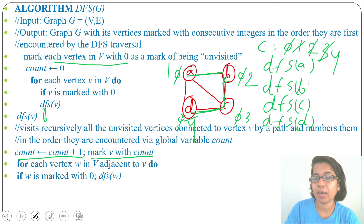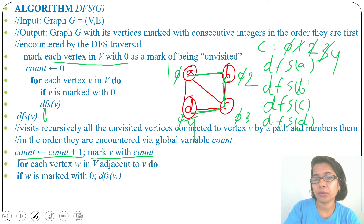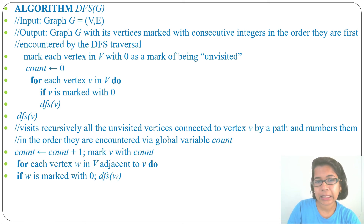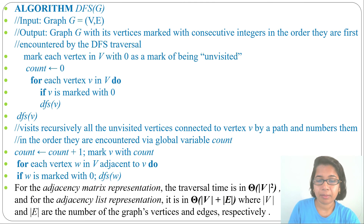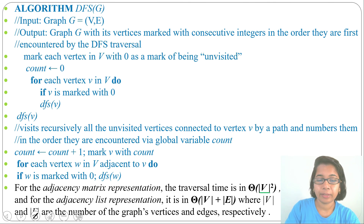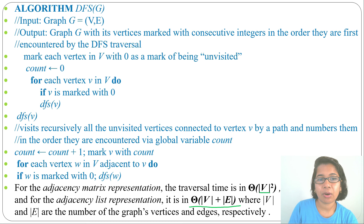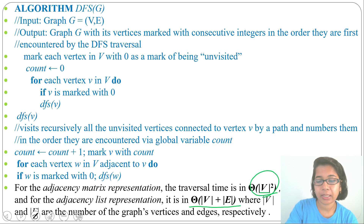This is the DFS algorithm. Initially all vertices are marked zero; as we visit each one we increment count and assign that number. From the count you can also find the sequence: 1, 2, 3, 4 — first we visit whose number is one, then two, then three, then four. Now the time complexity: for adjacency matrix representation, the traversal time is Θ(V²), and for adjacency list representation it is Θ(V + E). So it depends on graph representation.